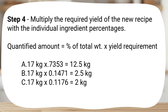Step 4: Multiply the required yield of the new recipe with the individual ingredient percentages. Quantified amount = percent of total weight × yield requirement. A: 17 kg × 0.7353 = 12.5 kg. B: 17 kg × 0.1471 = 2.5 kg. C: 17 kg × 0.1176 = 2 kg.